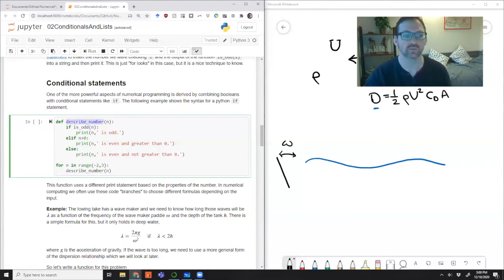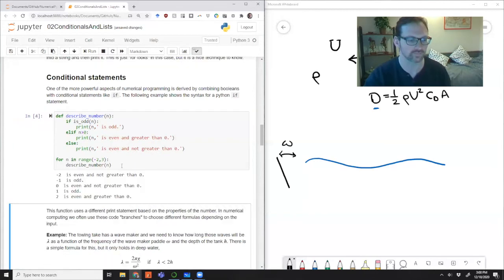So we've done this with this new function, describe number. We pass in the number n and then we check if it's odd. We check if it's greater than zero. And depending on those properties, we'll do one of these three print statements. Let's check. So negative two is even and not greater than zero. That's certainly true. So we can see that it's failed this first one. It's failed the second one. And so it's done the ELSE. Then minus one is odd, because it is. And so it's done this print statement.